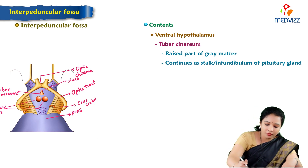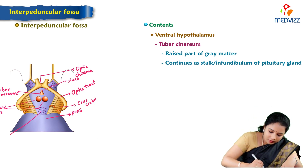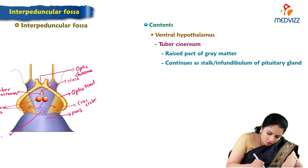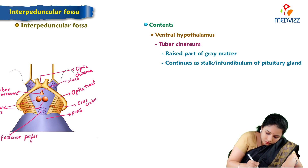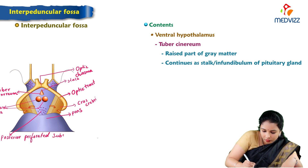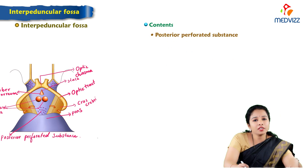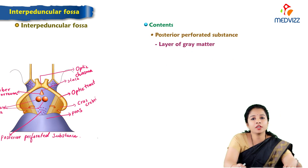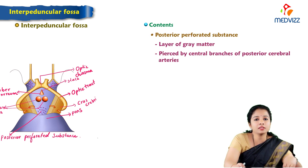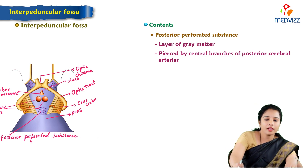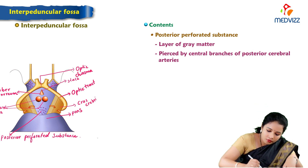The posterior perforated substance can also be seen — a sieve-like structure with holes. It is a layer of grey matter which is pierced by the central branches of the posterior cerebral artery.